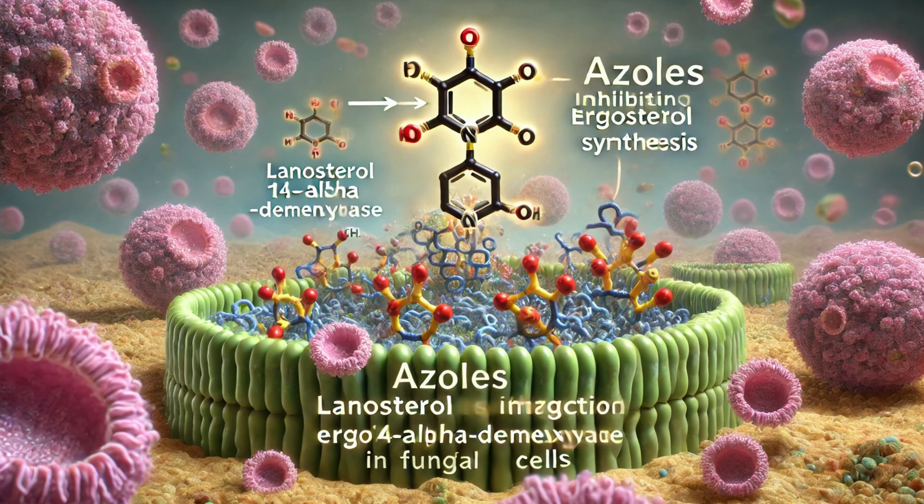Azoles, another class of antifungal drugs, inhibit the synthesis of ergosterol by targeting the enzyme lanosterol-14-alpha-demethylase. This enzyme is involved in converting lanosterol to ergosterol, an essential component of the fungal cell membrane. By inhibiting this enzyme, azoles disrupt cell membrane synthesis, leading to fungal cell death.